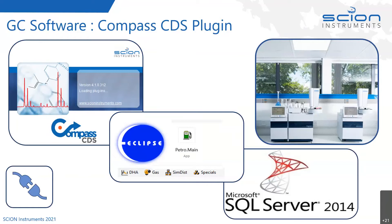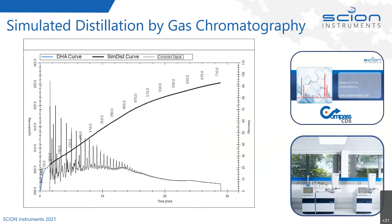Underpinning all of this is a Microsoft SQL Server running in the background. Two samples are run on separate applications: one on the SIMDIST application, and a second sample on another GC for the DHE analysis. The DHE analysis produces a short SIMDIST curve that is incorporated into the main SIMDIST curve, with the software combining them together into one report.